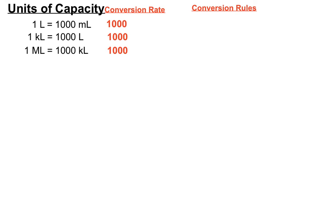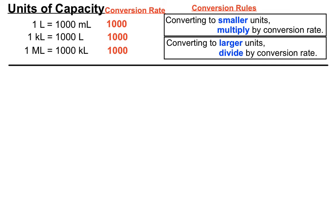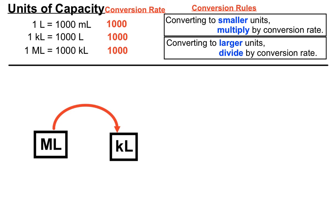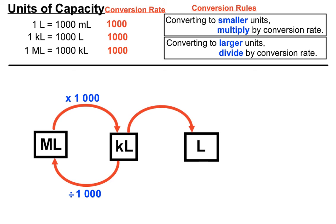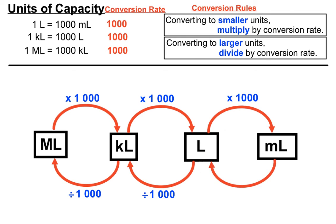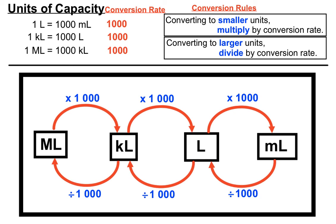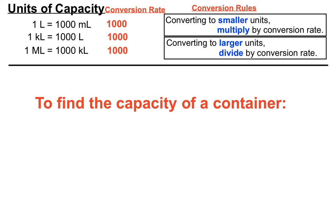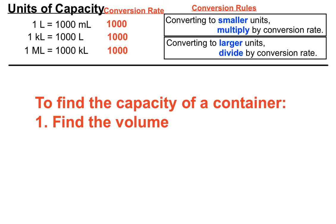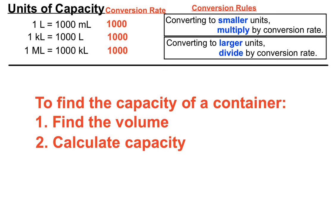To recap: our units of capacity are litres, millilitres, kilolitres, and megalitres, all with conversion rates of a thousand. A handy guide: to convert millilitres to kilolitres, multiply by a thousand; to go back, divide by a thousand. Between kilolitres and litres — multiply or divide by a thousand depending on direction. Between litres and millilitres — same rule. When converting to a smaller unit, multiply by a thousand; when converting to a bigger unit, divide by a thousand.